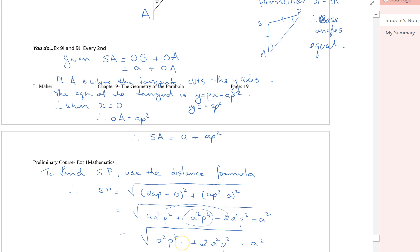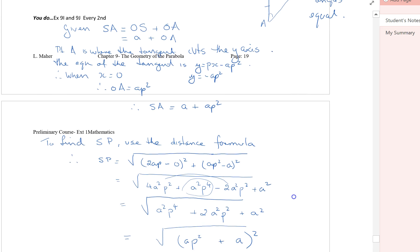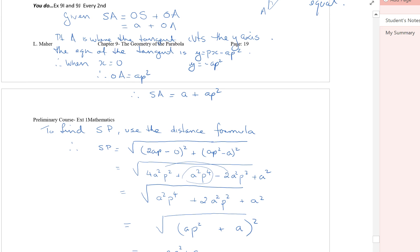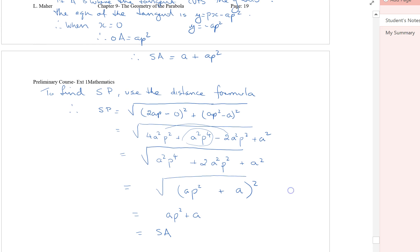And that's a perfect square. Now that's the expansion of a perfect square where we square AP squared, square the first, twice the product of the two, square the last, and the square root of something squared is just that, and that is the same as SA.